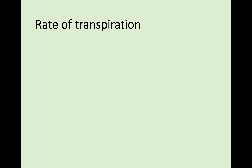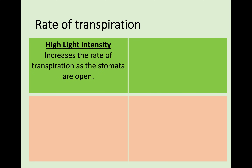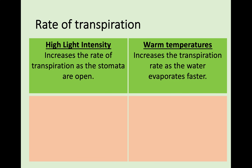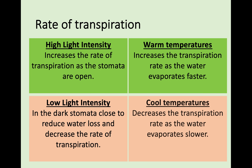Transpiration can be sped up or slowed down based on different environmental conditions. High light intensity increases the rate of transpiration because the stomata are open all the time. Warm temperatures also increase transpiration because water evaporates faster. Conversely, low light intensity - in the dark for example - means stomata close, decreasing the rate of transpiration. Cool temperatures also decrease transpiration rate because water evaporates slower.